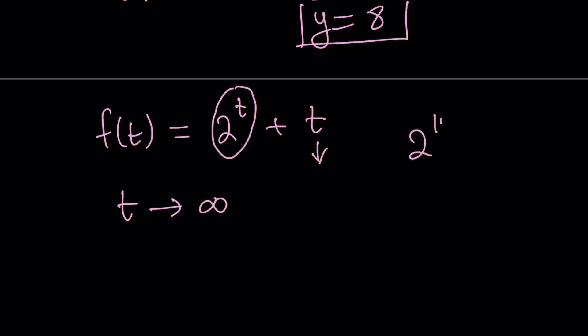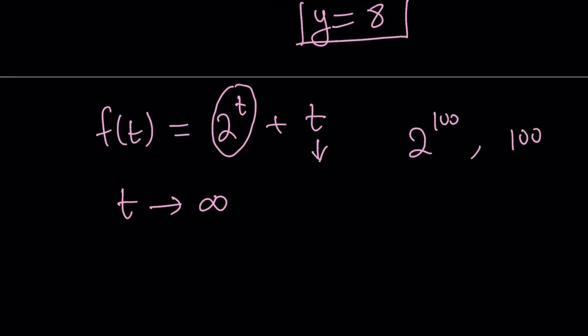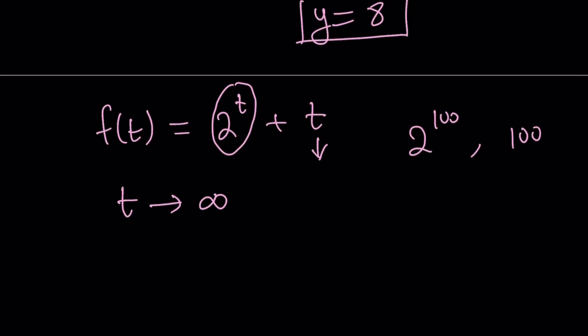This t will be insignificant, like super-duper small compared to 2 to the power of t. So our function is going to act like 2 to the power of t, which is exponential. And if t approaches negative infinity, then 2 to the power of t, I think we can look at the limit here. That makes more sense. And it's going to be 0. Why? Because we can write it as 1 over 2 to the power of negative t.